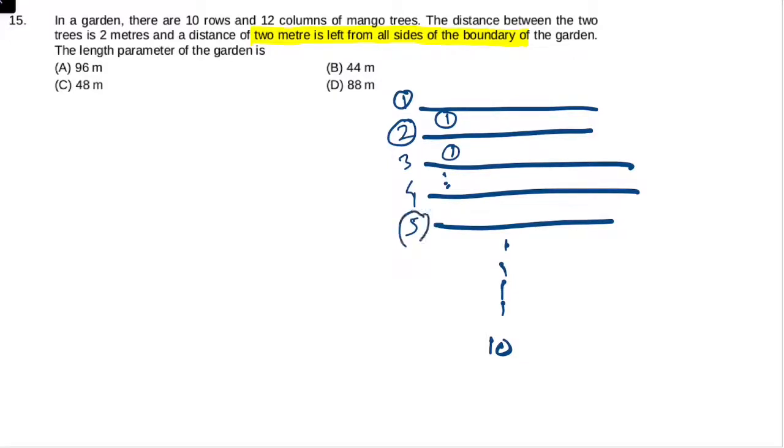So if there are 5 rows, total 4 spaces. If there are 10 rows total, the number of spaces between them is 9. And every space is 2 meters, so 9 into 2, that implies 18 meters.